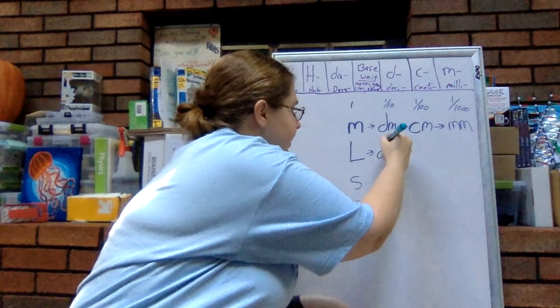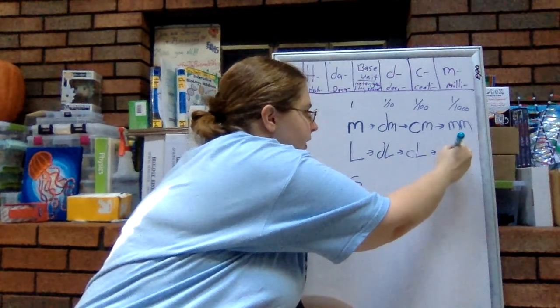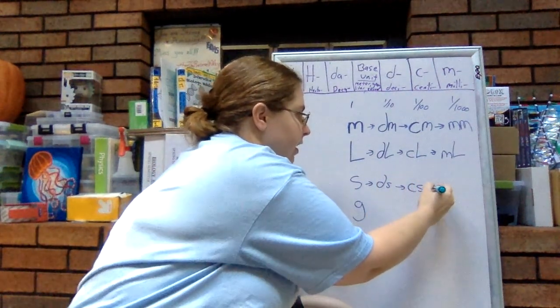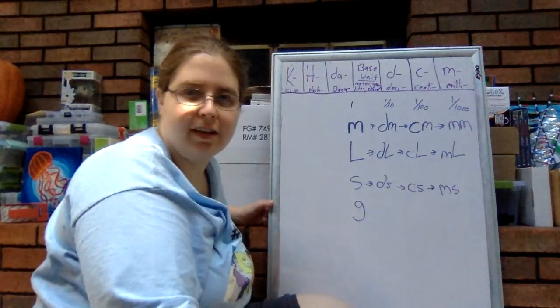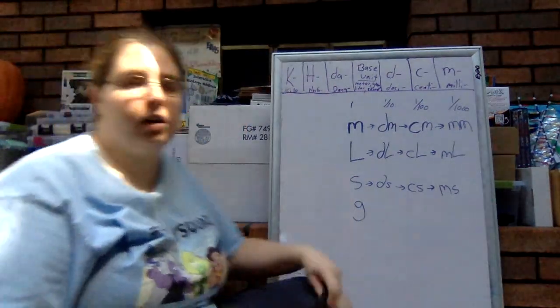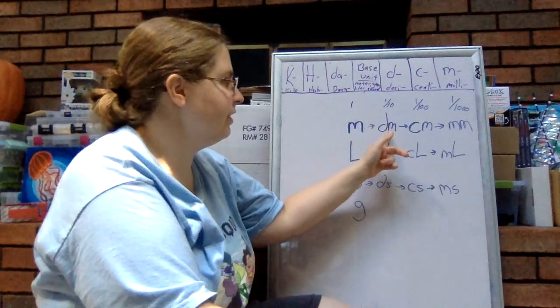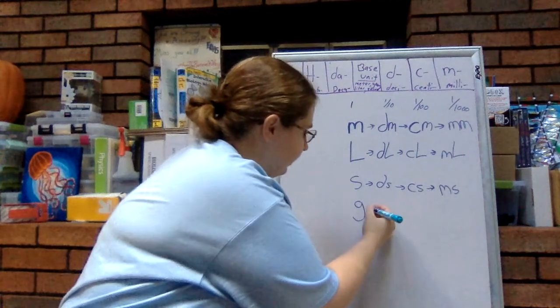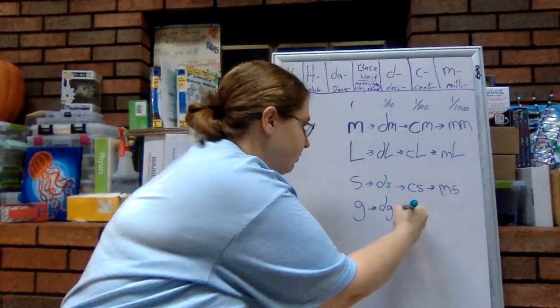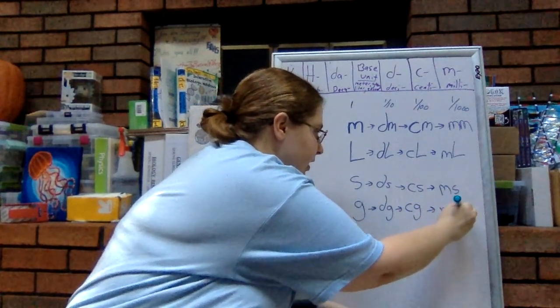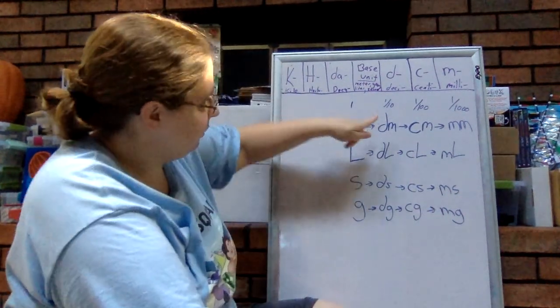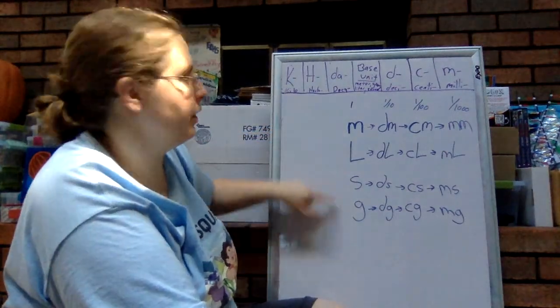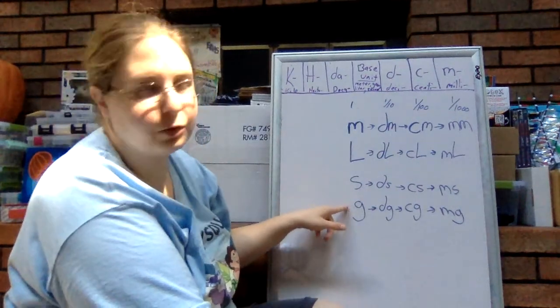And the nice thing is the prefixes don't change nor do their meaning for any other base units. So we can talk about a deciliter, centiliter, or a milliliter. We can talk about decisecond, centisecond, and milliseconds. Now some of these don't sound familiar, that's fine. We don't necessarily use all of them in common measurements. We barely talk about a decimeter. We're familiar with centimeters and millimeters but we really don't use decimeters all that much. Let's talk about a decigram, centigram, and a milligram. And all of these decis mean one tenth of the base unit. All of these centis mean one hundredth of the base unit. All of these millis mean one thousandth of the base unit.